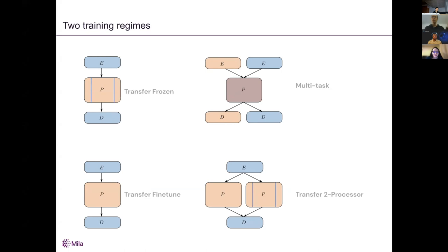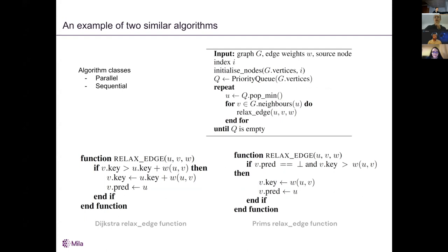In the sequential setting, each node has two key attributes: the key — the current shortest path or current weight to the spanning tree — and the predecessor. The predecessor refers to the preceding node in the shortest path. So if you have a shortest path from U to V to W, then W points to V, V points to U, and U points to itself. This gives us two metrics to verify how well the neural network learned to execute the algorithm: key prediction and predecessor prediction.